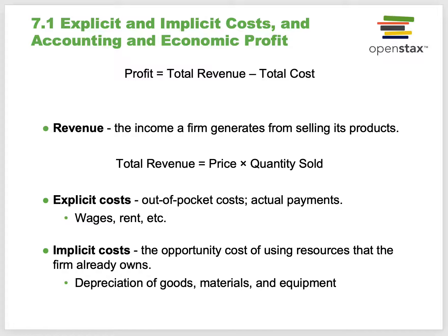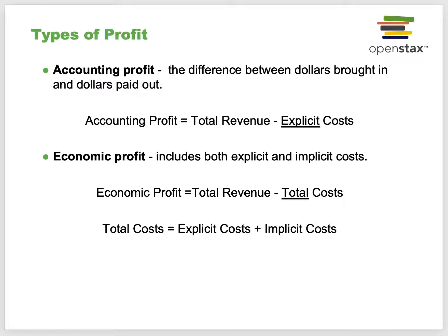Explicit and implicit costs, and accounting versus economic profit. Profit is basically total revenue minus total cost. Revenue is income or sales from selling a product; total revenue equals price times quantity sold. Explicit costs are out-of-pocket costs—actual payments: wages, fixed costs, and variable costs. Implicit costs are the opportunity costs of using resources the firm already owns, including depreciation of goods, materials, and equipment. Accounting profit is total revenue minus explicit costs. Economic profit is total revenue minus total costs—combining both explicit and implicit costs.